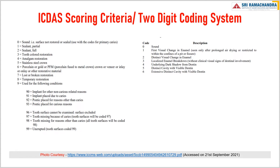For example, if the tooth is restored with amalgam which also exhibits an extensive dentinal cavity with visible dentin, it would be coded as 4-6. The first digit 4 represents amalgam restoration and 6 represents extensive dentinal cavity with visible dentin. An unrestored tooth with a dentinal cavity would be scored as 0-6. The suggested restoration and sealant coding system is as follows: the first digit represents 0 as sound, that is a surface not restored or sealed, used with the codes for primary caries.